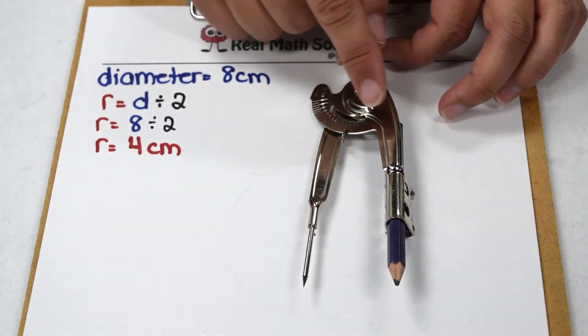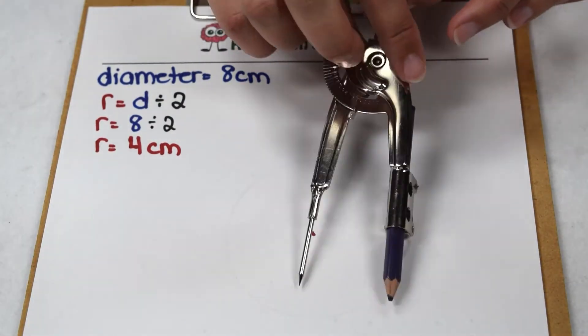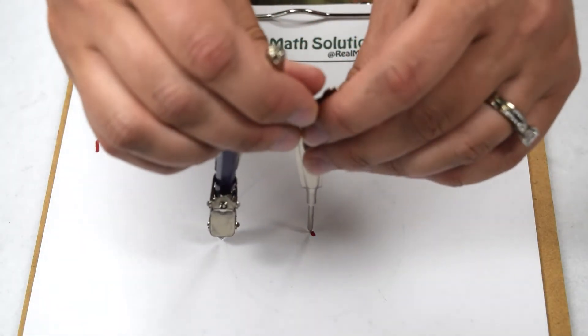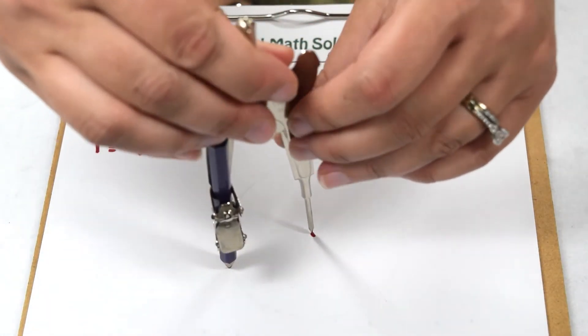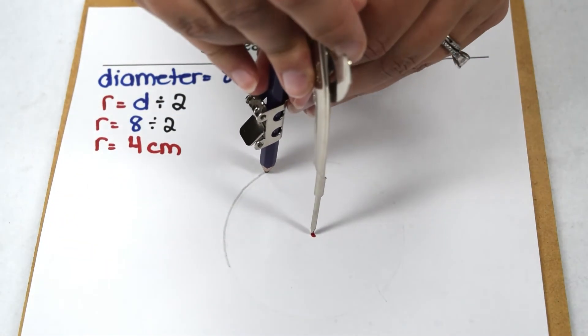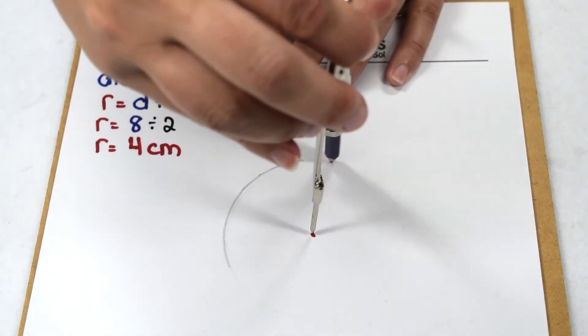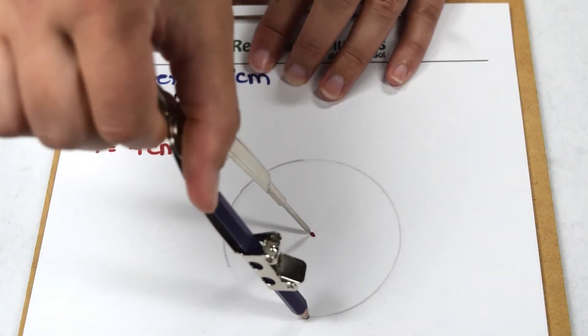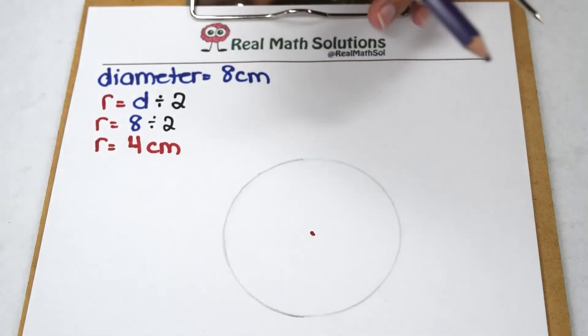So using the centimeter side of our arc, I'm going to set it so it measures at four centimeters. Then I can stand my compass up, anchor it where I want the center point of my circle to be, and twist my compass around, holding my paper down so it'll go smoothly, the entire arc to create my circle.